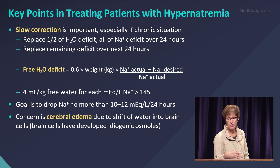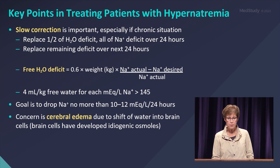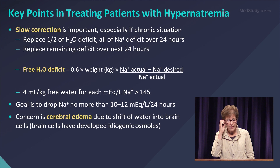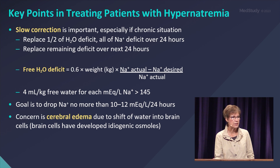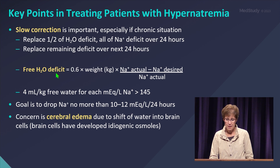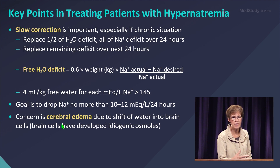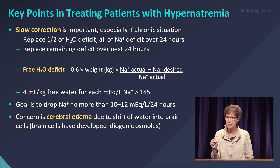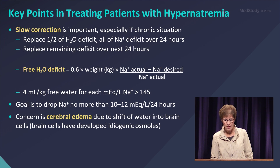Key points in treating patients with hypernatremia: it's usually a water problem. Slow correction is important, at about the same rate as correction of hyponatremia. You do half the water deficit and all of the sodium deficit in 24 hours, then replace the remaining deficit over the next 24 hours. There's a calculation for free water deficit you can use. Our main concern with correcting hypernatremia too quickly is not cell shrinkage — it's cerebral edema, because water can shift into the cells of the brain.